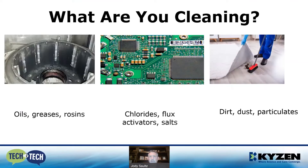Some examples include oils, greases, and rosins in bearing assemblies, and flux activators, salts, and chlorides on the PCB side. Don't just sweep away dust, dirt, and particulates under the rug — there are ways to clean those residues too. You just have to remove the bulk amounts first.